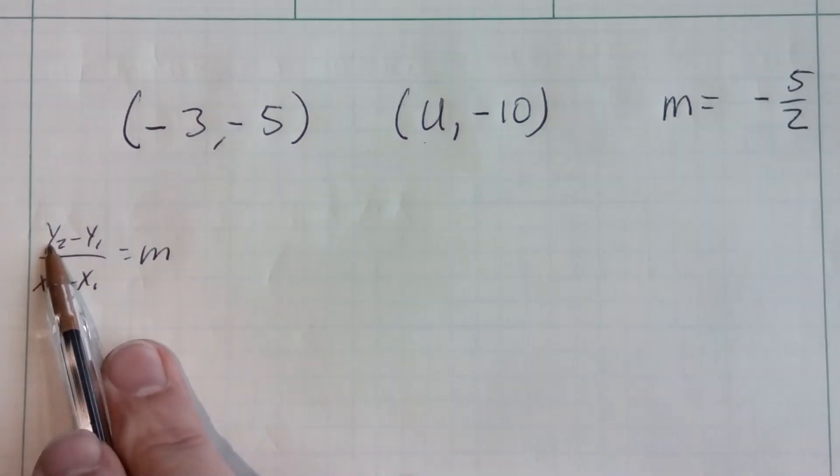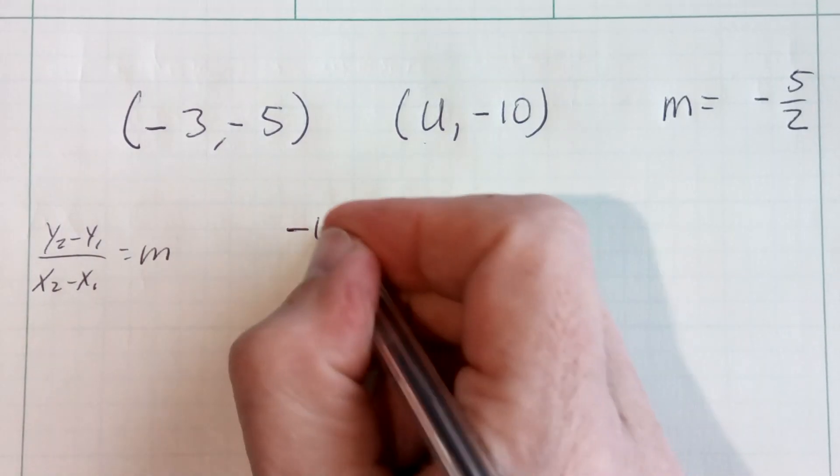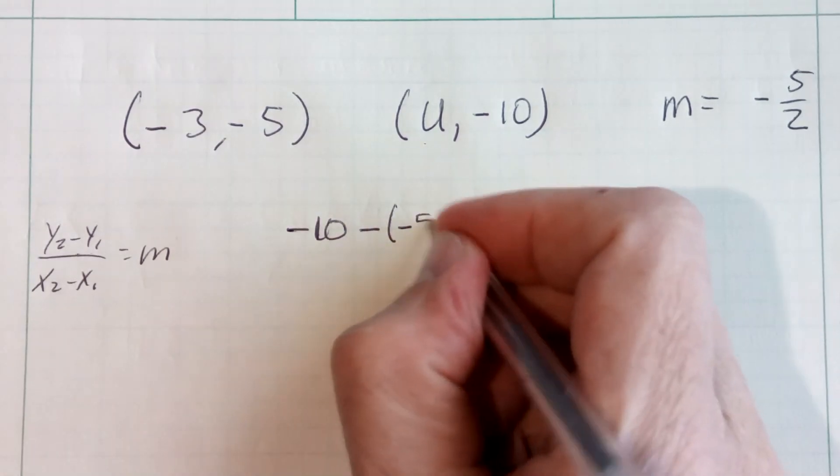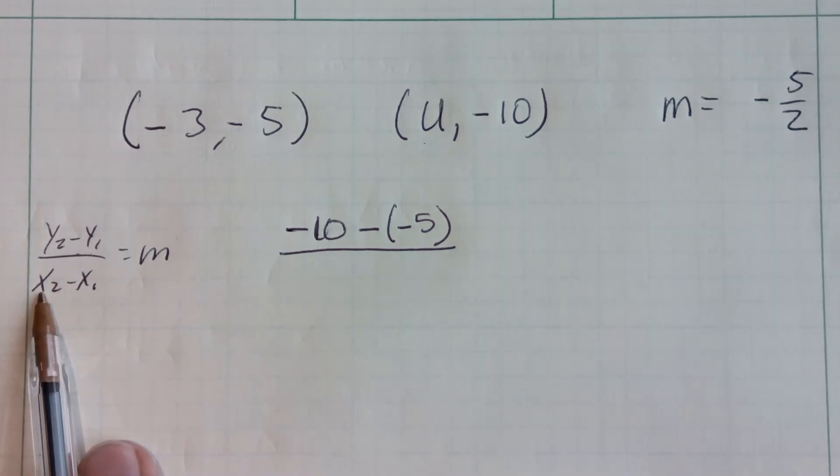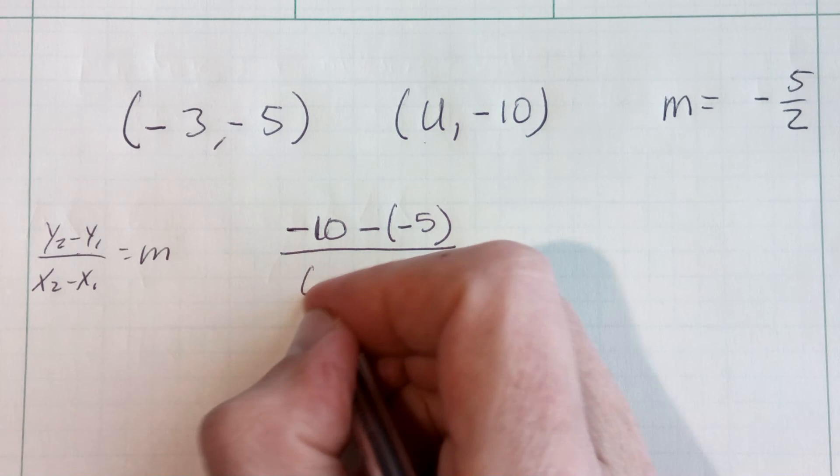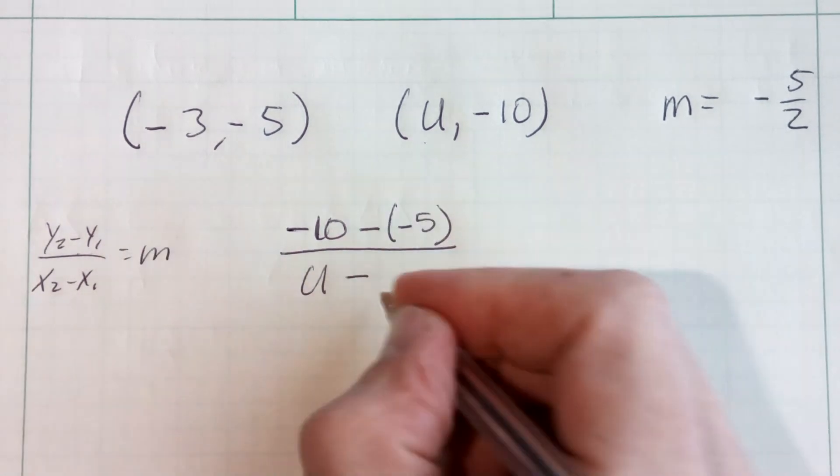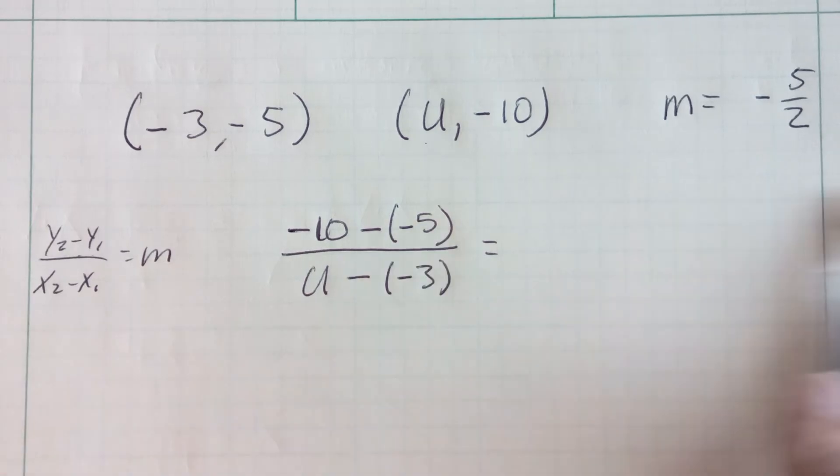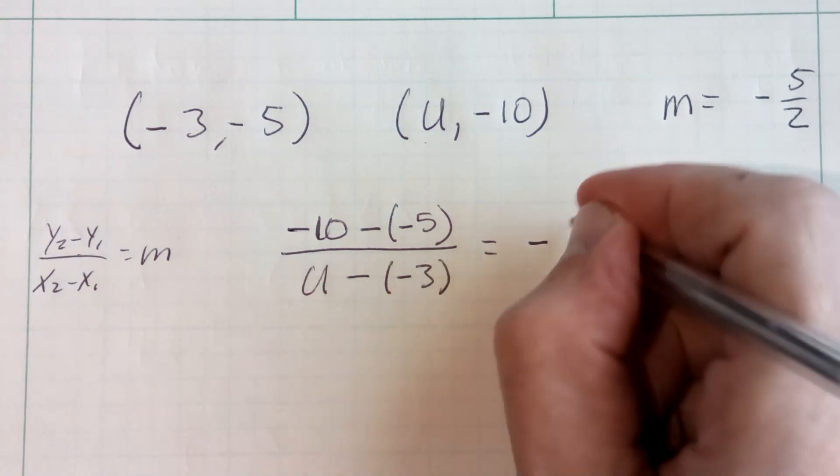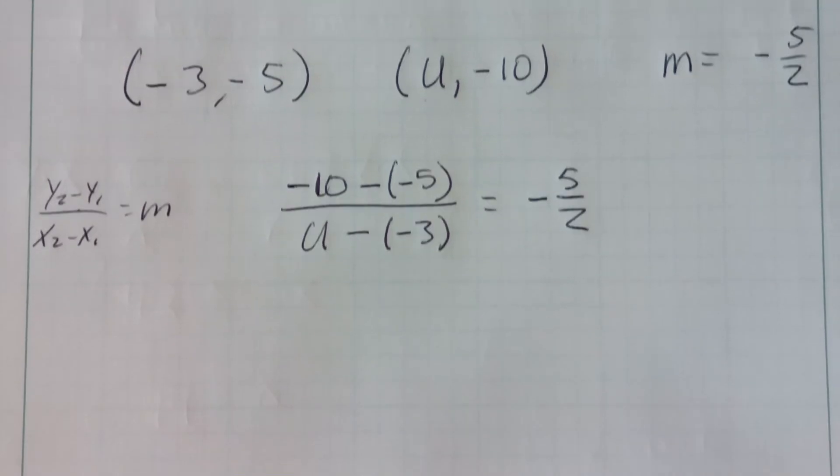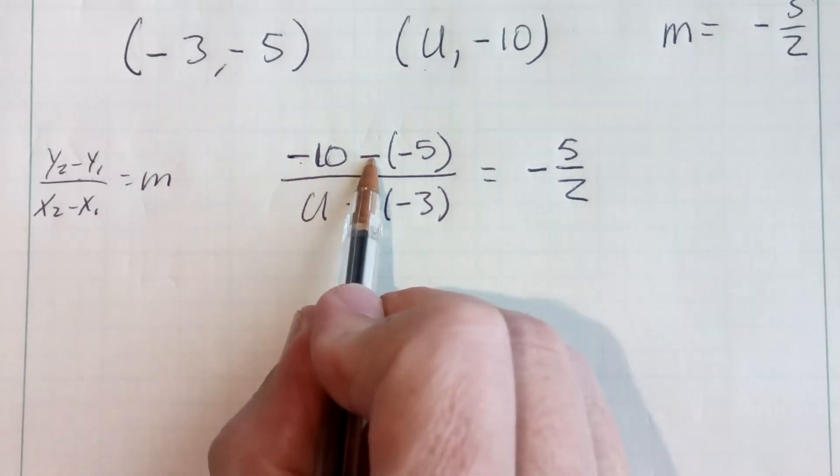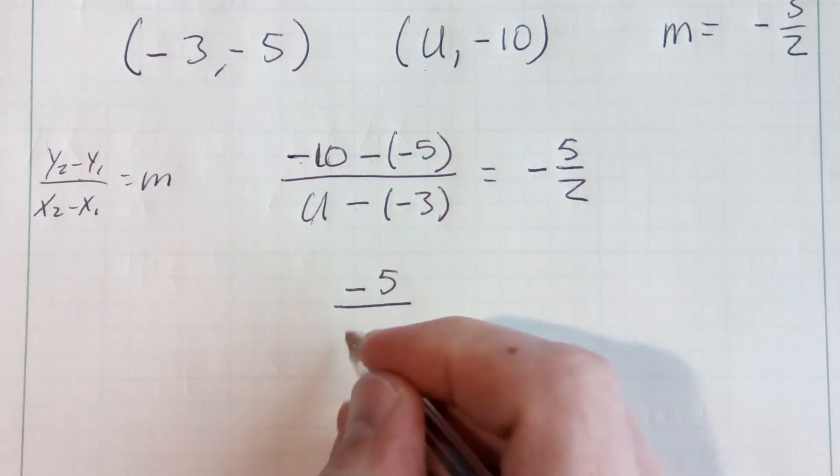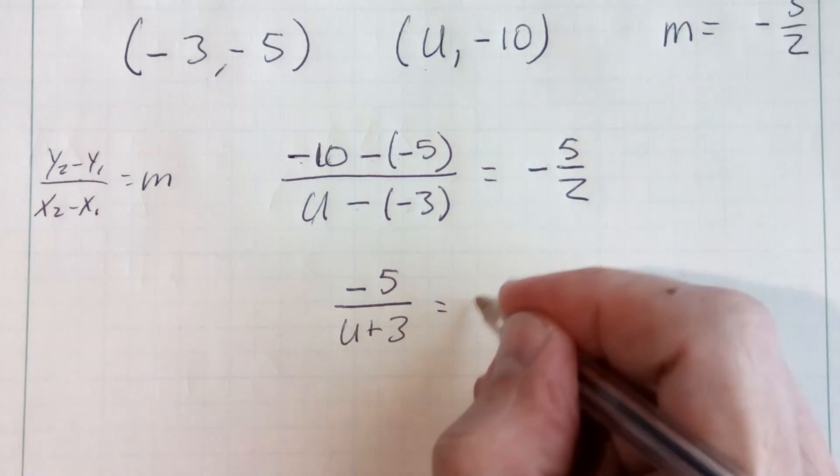Okay? What's my second y value? Negative 10 minus my first y value. Now be very, very careful here. I'm minusing a negative 5, so watch your minus signs, over x2, my second x value, which is u, minus my first x value, which is negative 3. Now that equals my slope. And again, what was my slope? What did they tell us our slope was? Negative 5 halves. Now let's simplify. Okay? In other words, negative 10 minus a minus or plus 5 will be negative 5 over u minus a minus means it's going to be u plus 3 equals a negative 5 over 2.